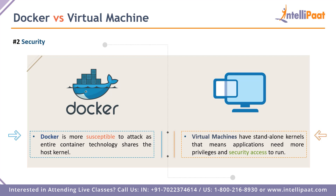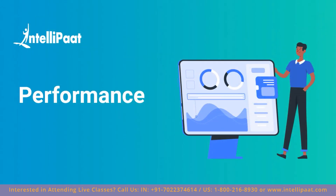On the topic of security, since Docker uses one kernel shared across all containers, it is more susceptible to attacks. Unauthorized access to one container can potentially grant access to all data, due to the shared host kernel. Virtual machines, on the other hand, each have their own kernel. Whoever tries to access data must pass through many security protocols and privilege requirements. In this round, virtual machines have the upper hand due to their standalone nature.